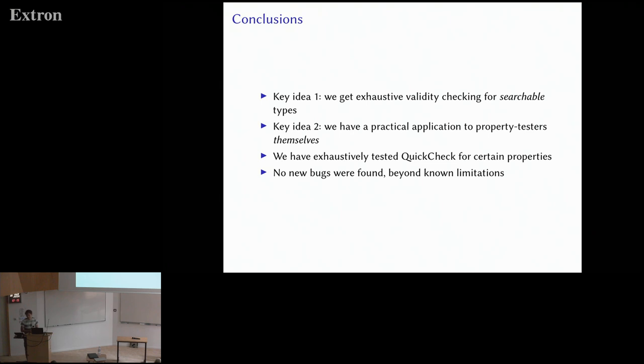Conclusions. I see that I have my timing right, so I'm happy about that. The two key ideas here is that we get exhaustive validity checking for searchable types, which I haven't seen exploited before. The second key idea is that we can actually make use of that for the higher order problem of validating property testers themselves.